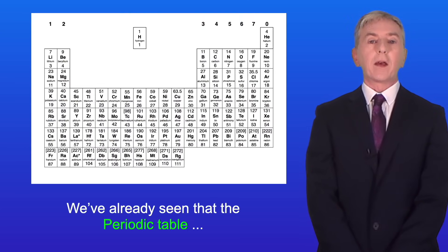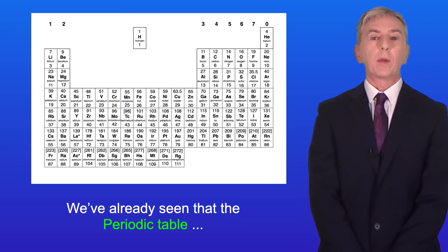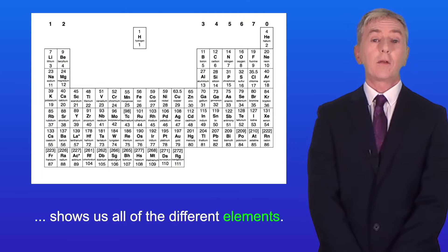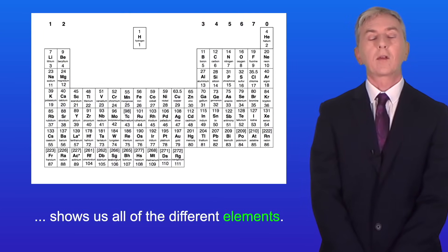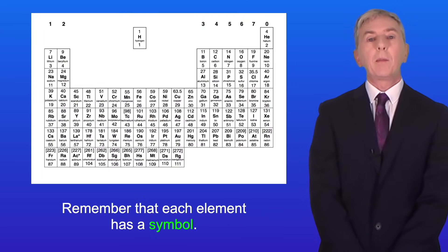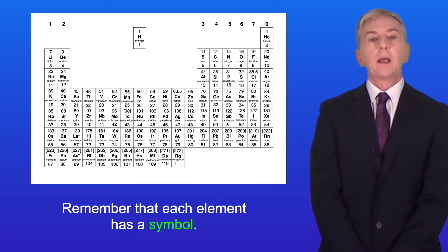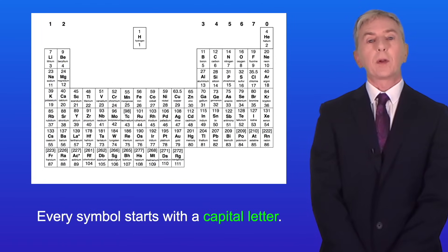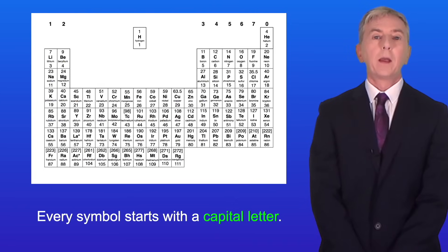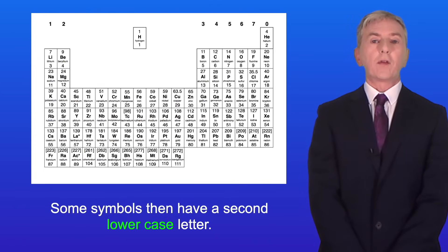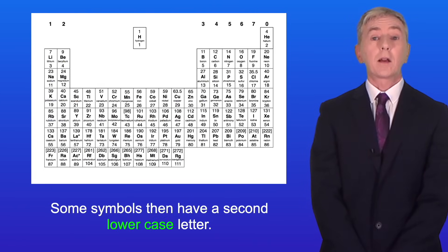We've already seen that the periodic table shows us all of the different elements. Remember that each element has a symbol and every symbol starts with a capital letter. Some symbols then have a second lowercase letter.